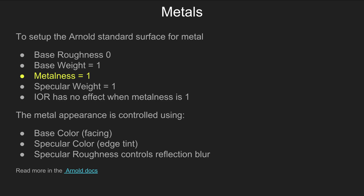To set up Arnold's standard surface for a metal: set the base weight to one, metalness to one, specular weight to one. In Arnold, if you set the metalness to one, the IOR has no effect — so it doesn't do anything. You can mess with it all you like and it'll have no effect.